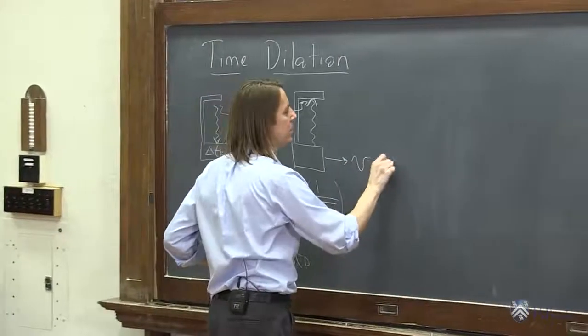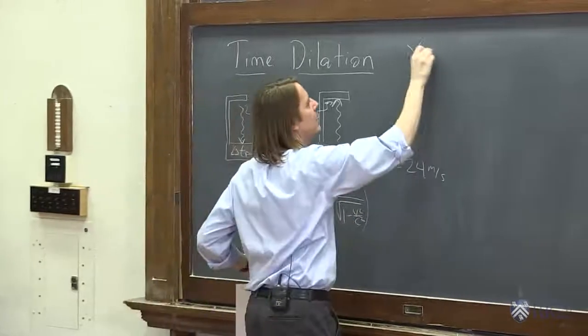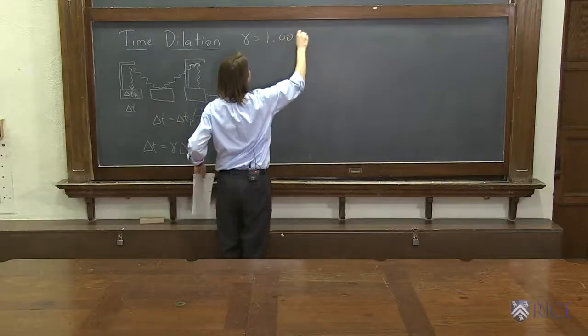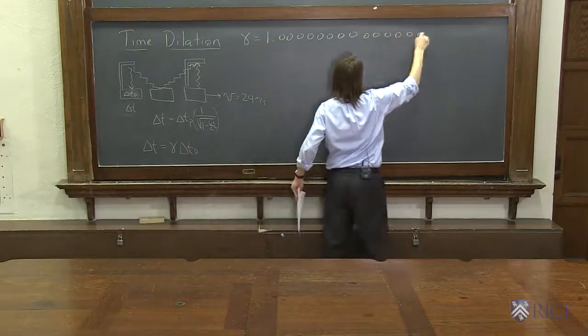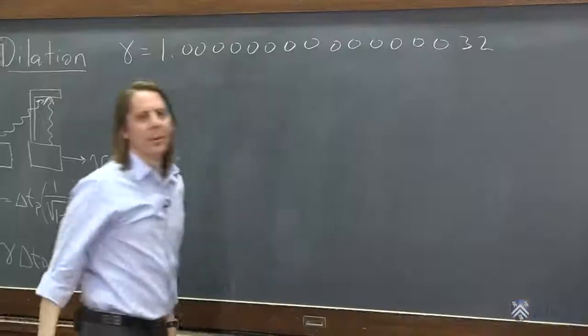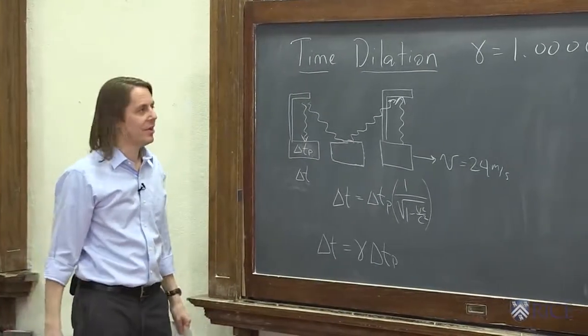In fact, for this situation where it's 24 meters per second, gamma is equal to 1.003. That's our gamma. So it would be very hard to notice the difference in this case.